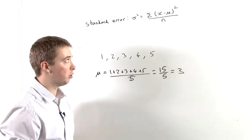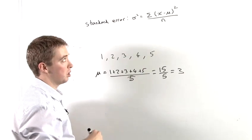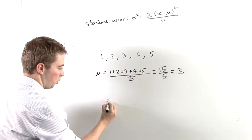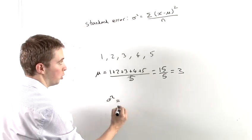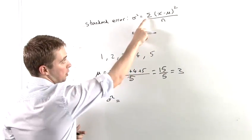So we now have the mean, which is 3, and we're now going to do this calculation up here. So the standard error squared is equal to the sum, that's what that symbol means, it just means the sum of each of these points...